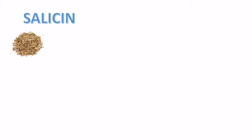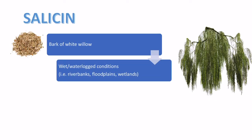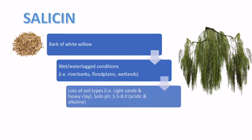I'm now going to talk about actual examples of medicines found in nature and the conditions under which they grow. Starting with salicin, which comes from the bark of the white willow. It's often found in wet and waterlogged conditions — by the sides of riverbanks, on floodplains and wetlands. Because of this, it can grow in quite a lot of soil types, from light sands to heavy clay, and in slightly acidic to slightly alkaline soils, making it a versatile and hardy plant.